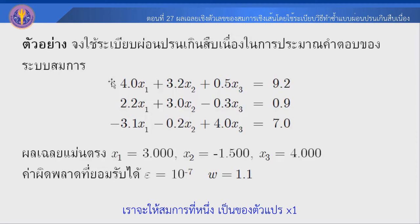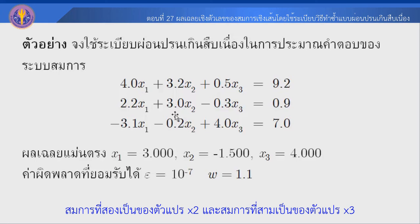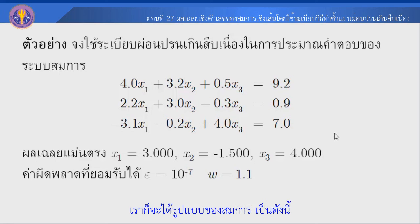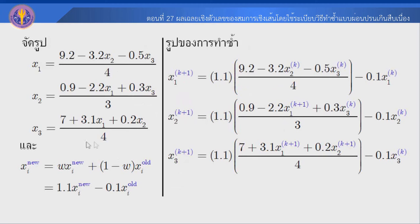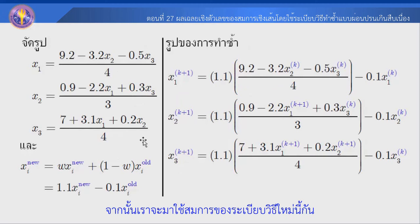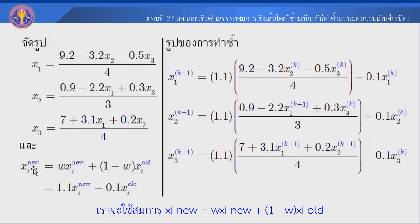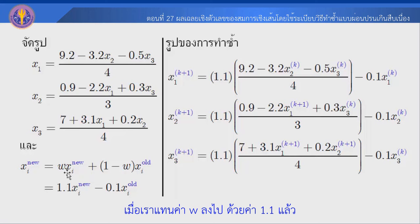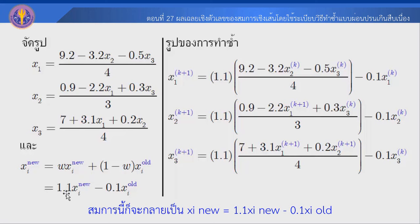We will show the pattern: row 1 is from x1, row 2 is from x2, and row 3 is from x3. We will use the SOR formula: xi_new = w * xi_new_GS + (1 - w) * xi_old, with w = 1.1, so xi_new = 1.1 * xi_new_GS - 0.1 * xi_old.